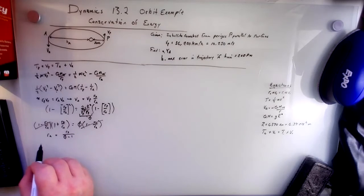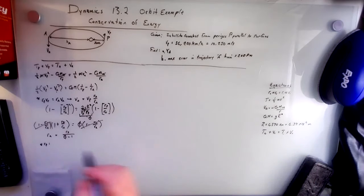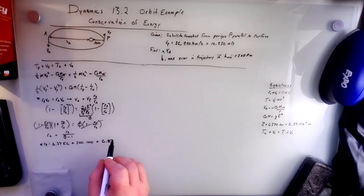Because we're given RP, we can find RP very quickly. So RP is 6.37 times 10 to the 6th plus 500 times 1000 meters. This is 0.5 times 10 to the 6th. So this is going to give us 6.87 times 10 to the 6th meters.